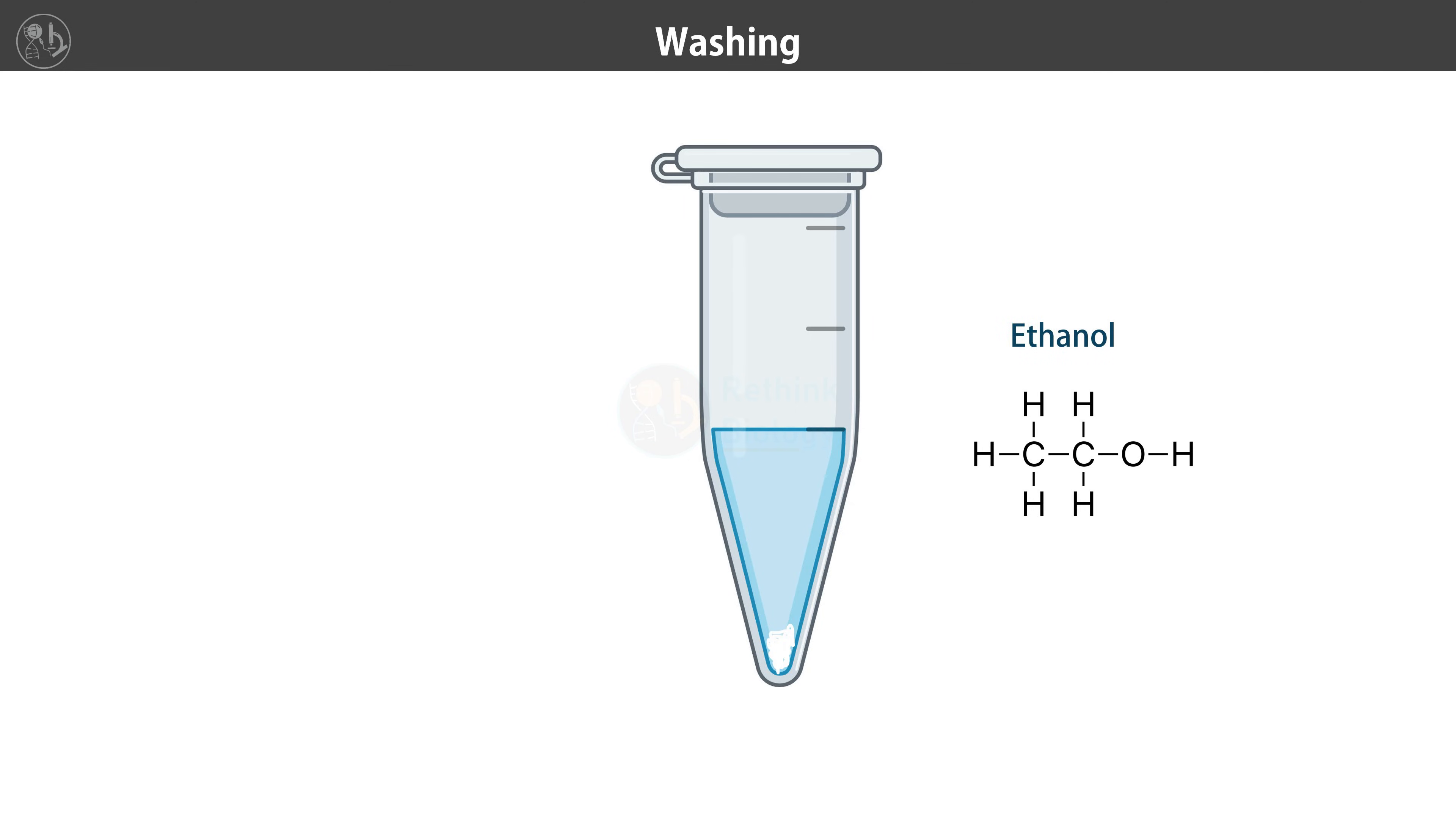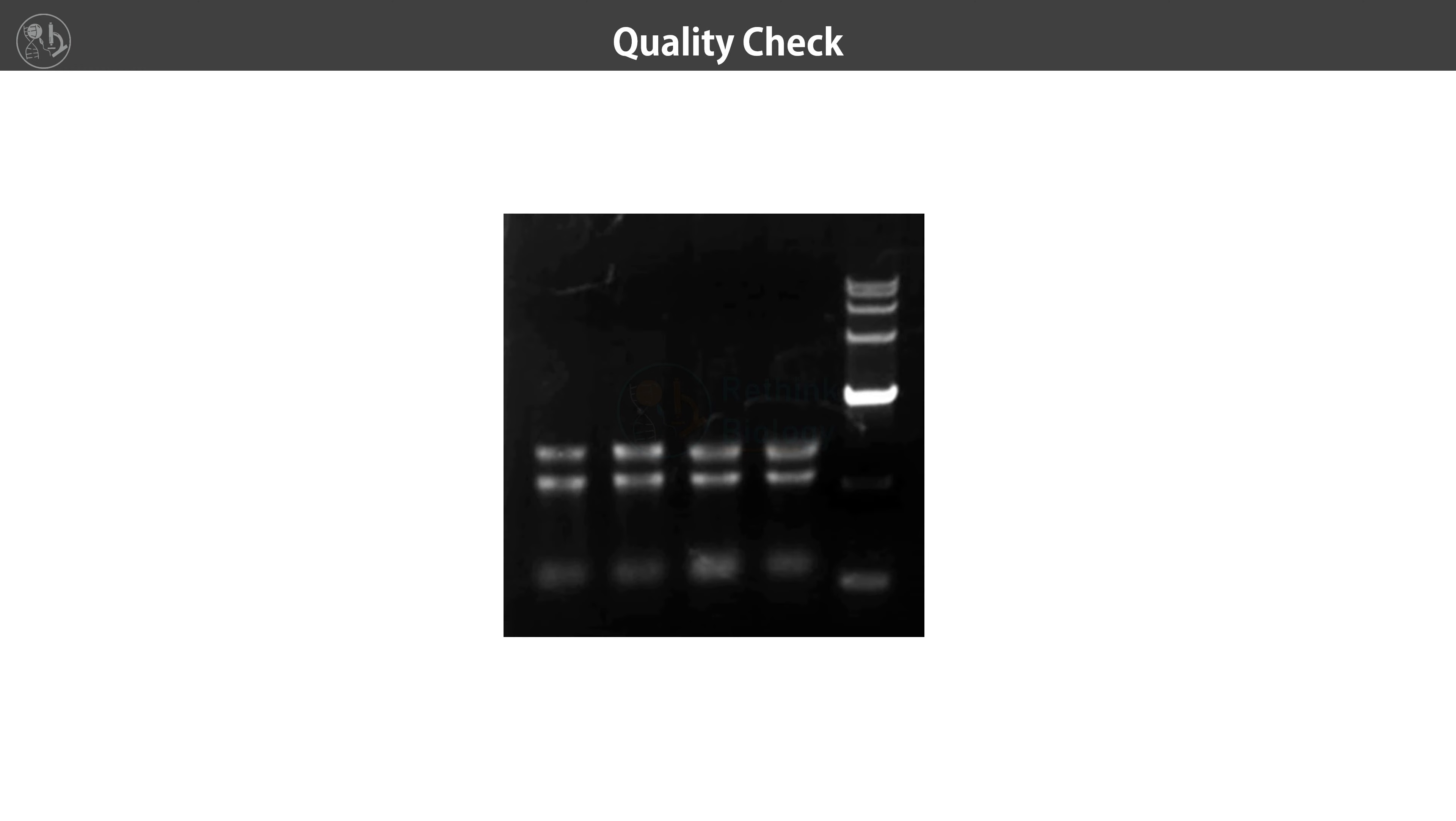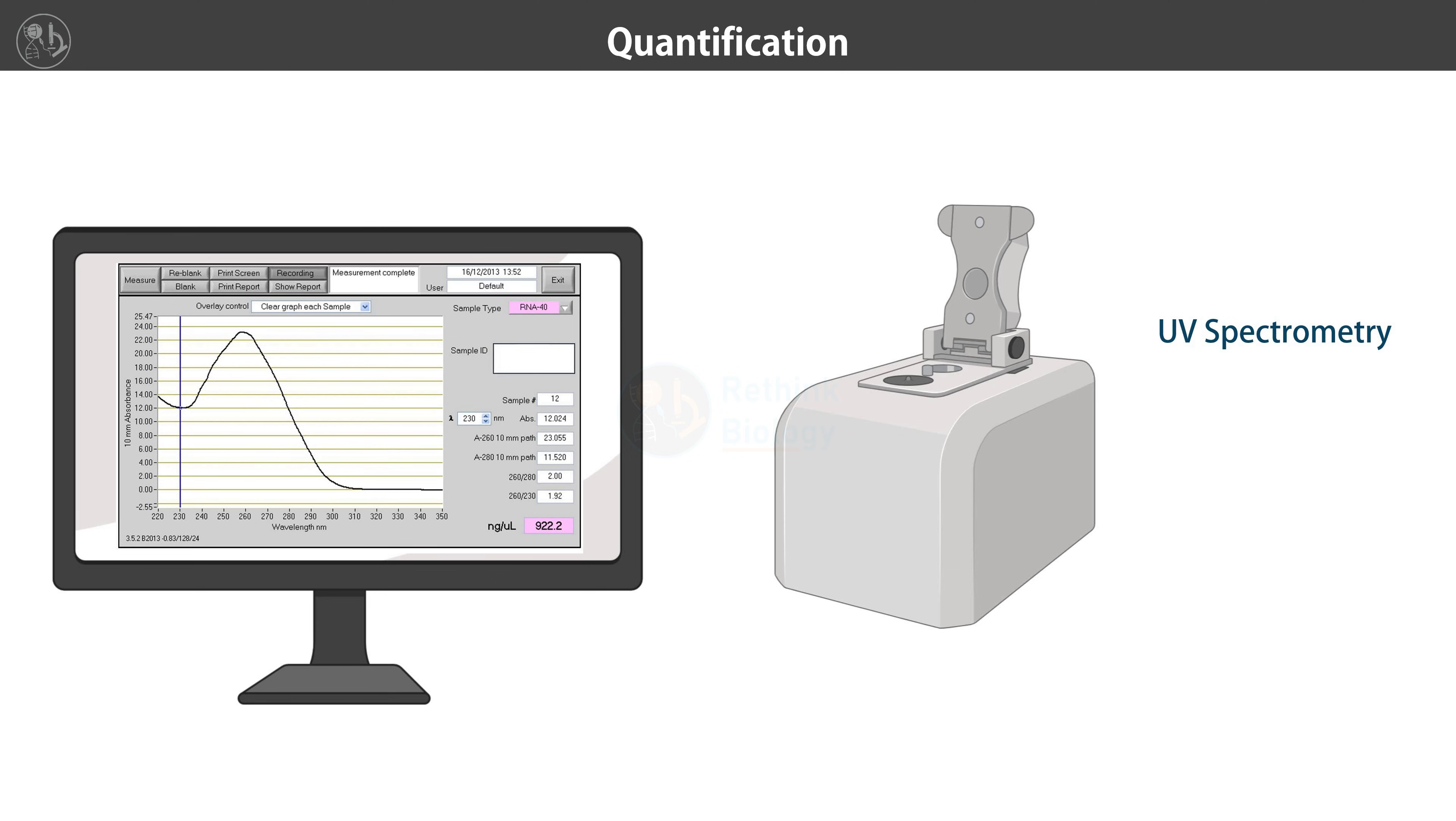The clean RNA pellet is dissolved in a buffer or water that is free of RNases. The integrity and purity of RNA are assessed using gel electrophoresis. The concentration of RNA is measured using UV spectrophotometry to determine how much RNA is present in the sample.